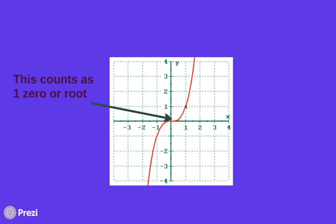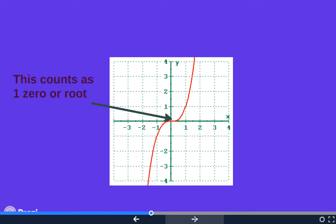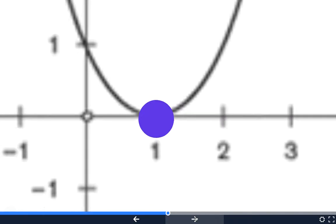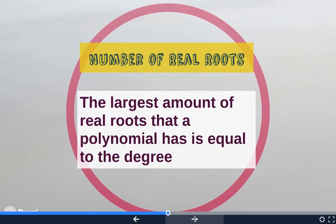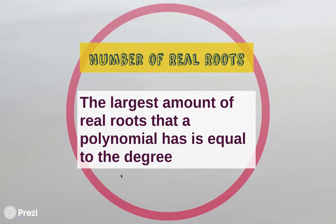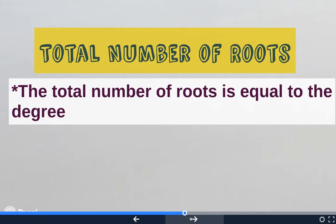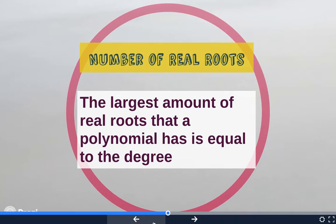We're going to do an activity in class relating to how many zeros or roots or x-intercepts polynomials will have, and it actually relates to the degree. After doing that activity, you'll find out that the largest amount of real roots a polynomial has is equal to the degree. So the most zeros you can see on a graph equals the degree of the polynomial.